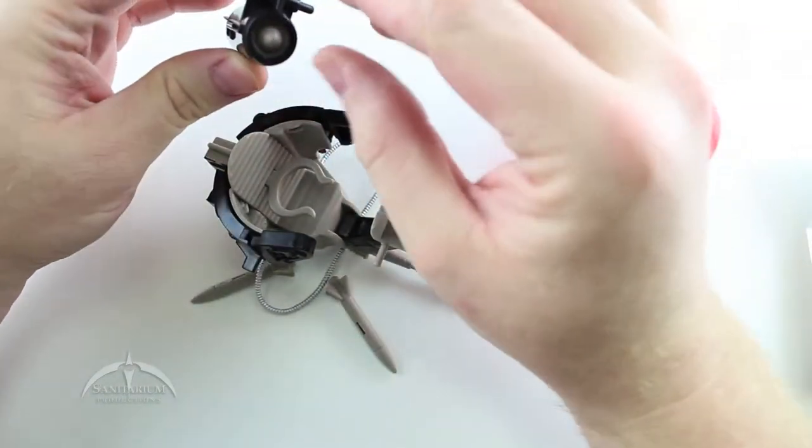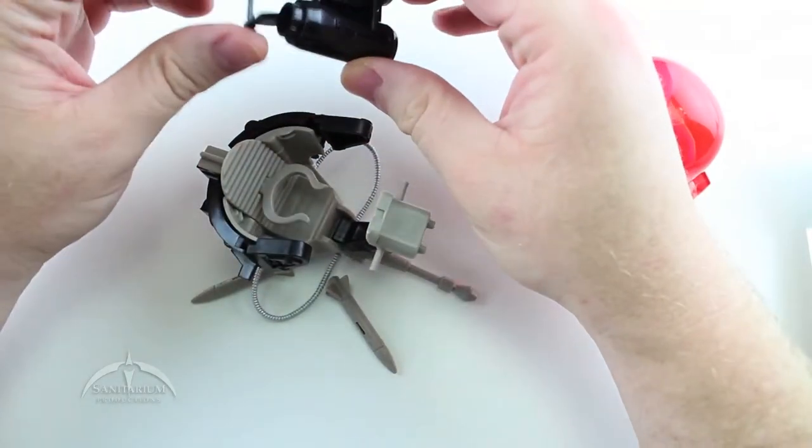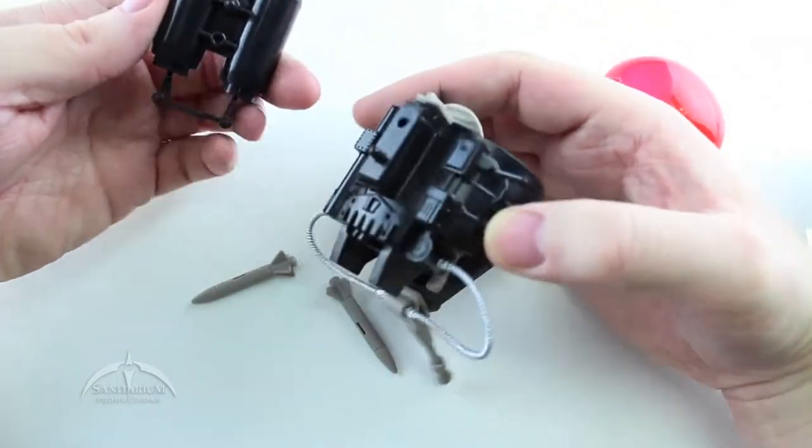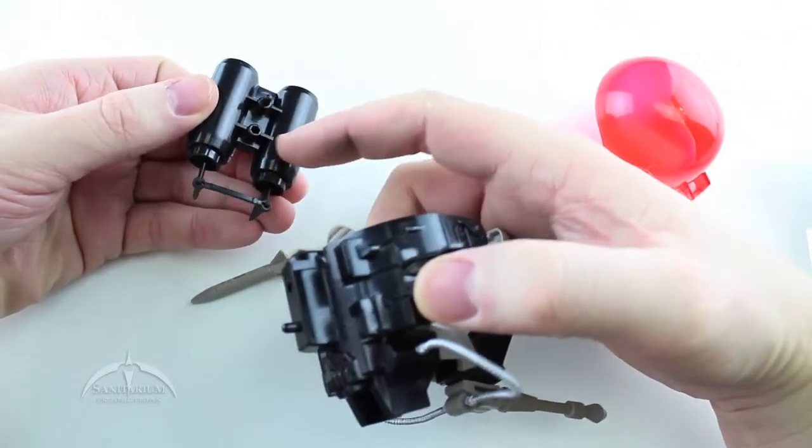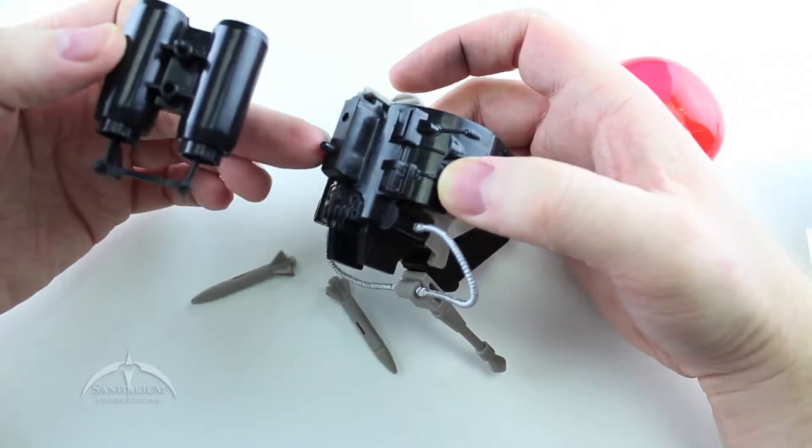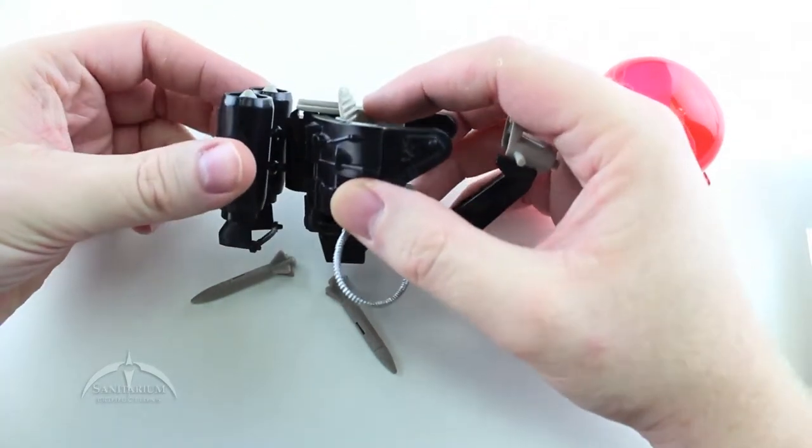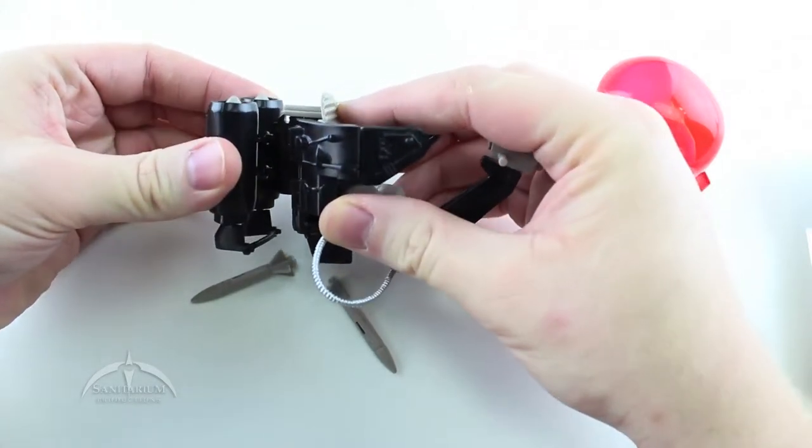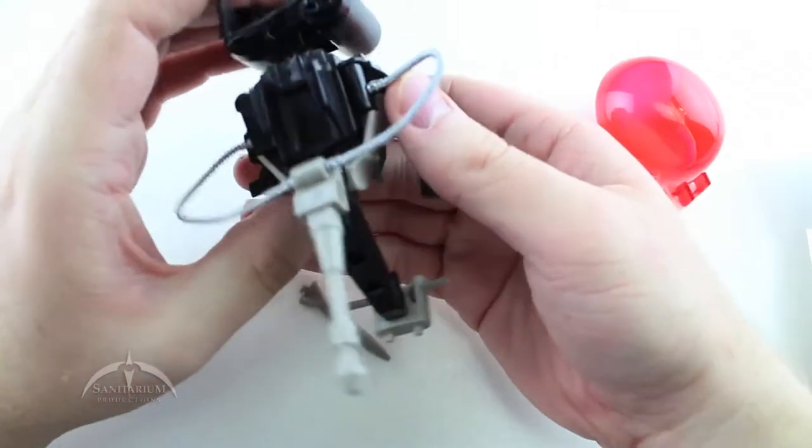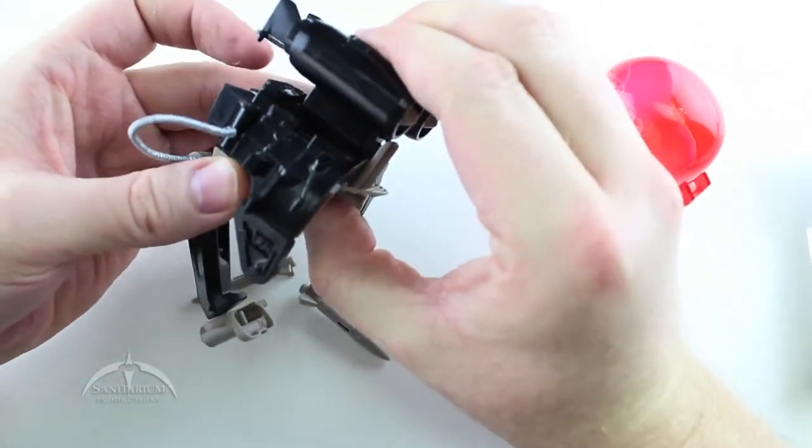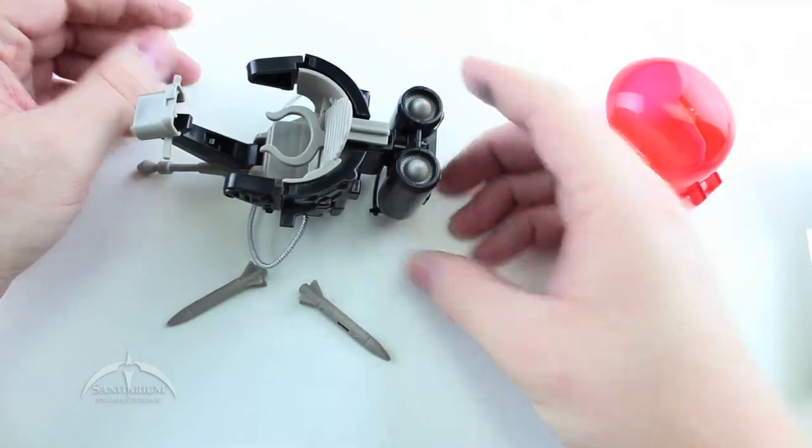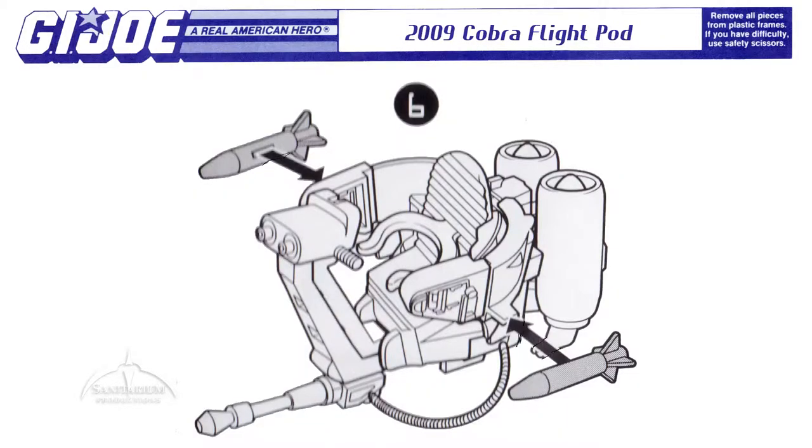Step five is to attach the jet pack. It comes pre-assembled as well, it's a two-piece shell with some nice detail work inside and these rotor finny things. It just snaps to the back of the pod itself. On the jet pack there's a peg and another hole, and on the actual pod it's just reverse of that. You just line those up, press on it and it snaps in place. You have to press a little bit harder to get it all flush.